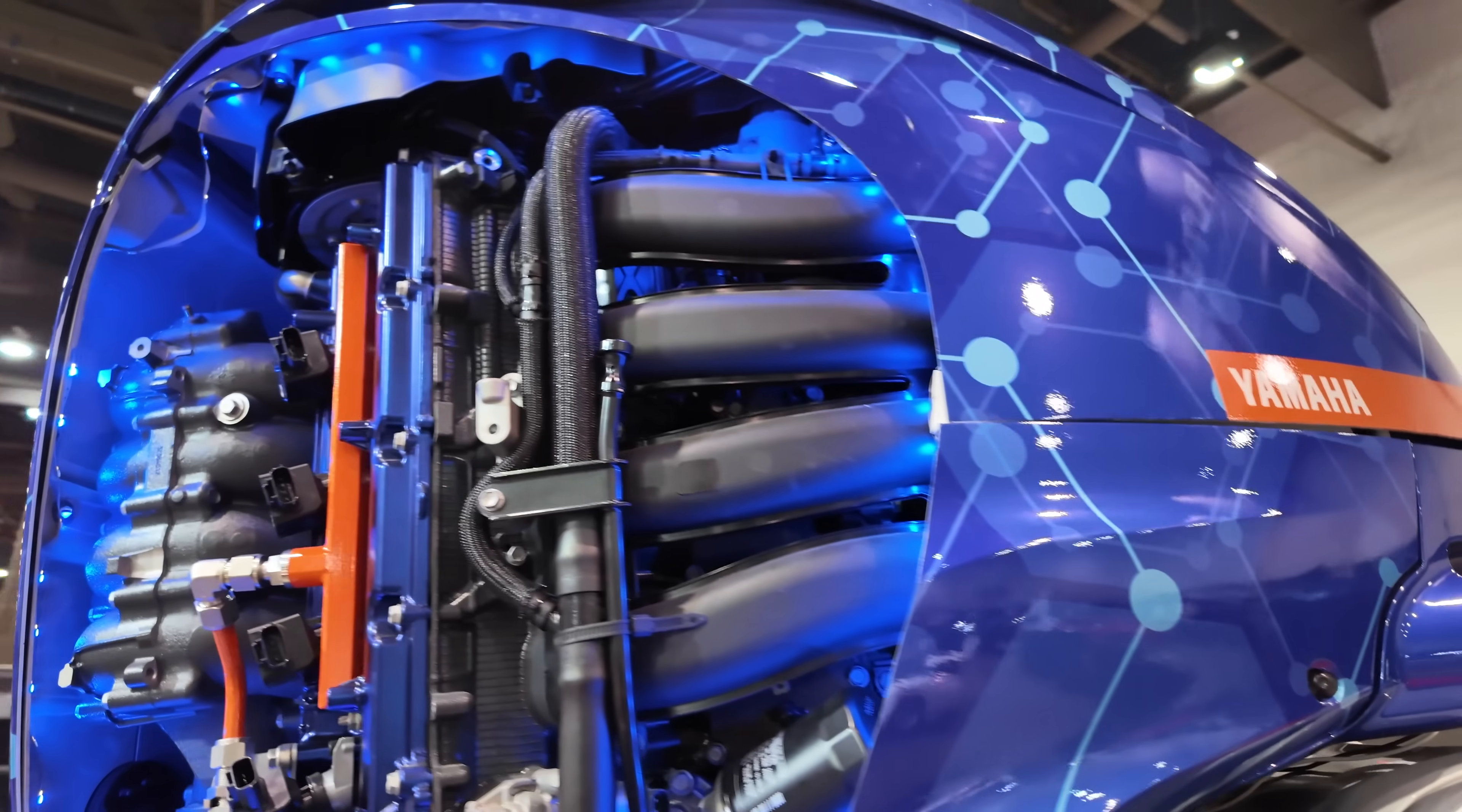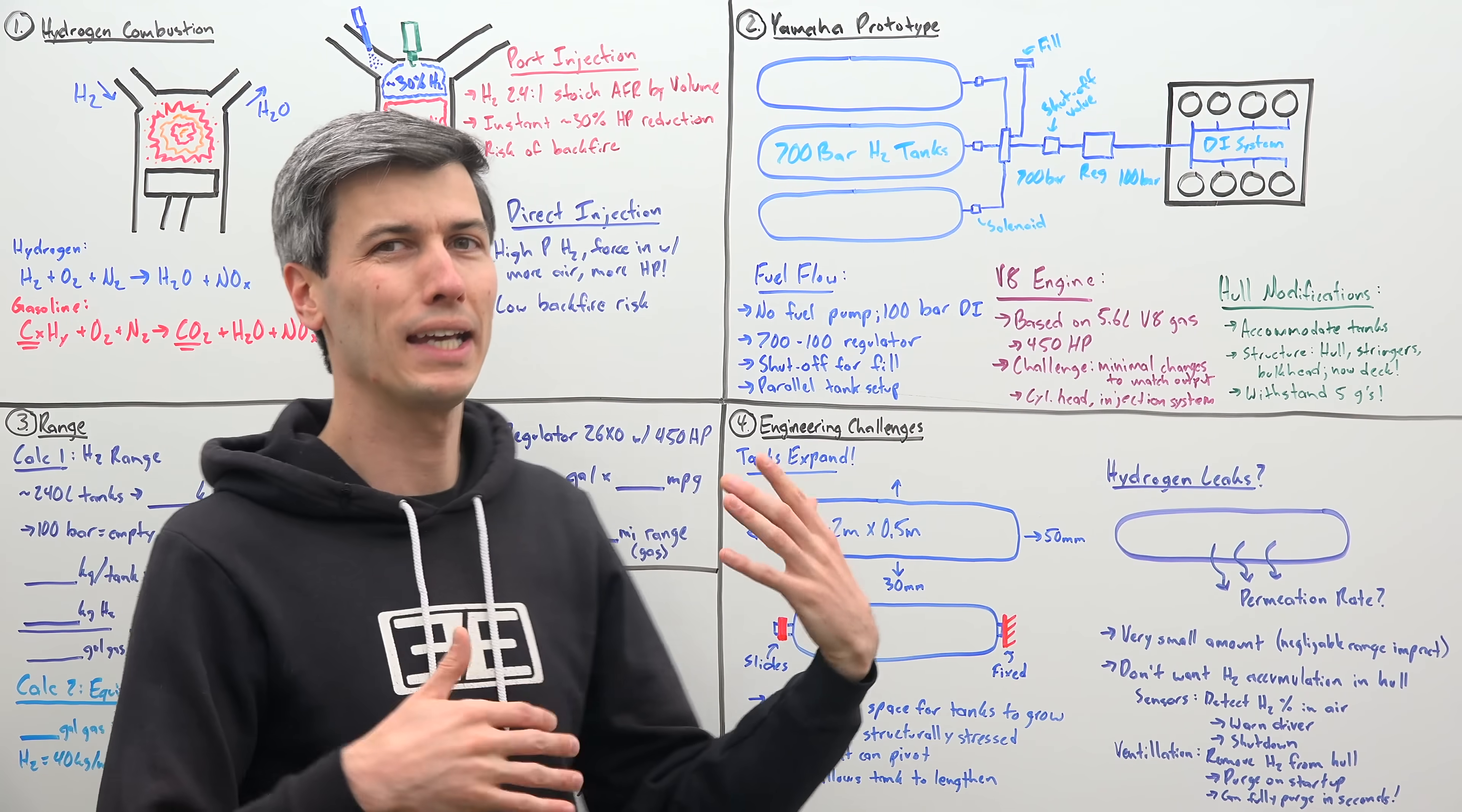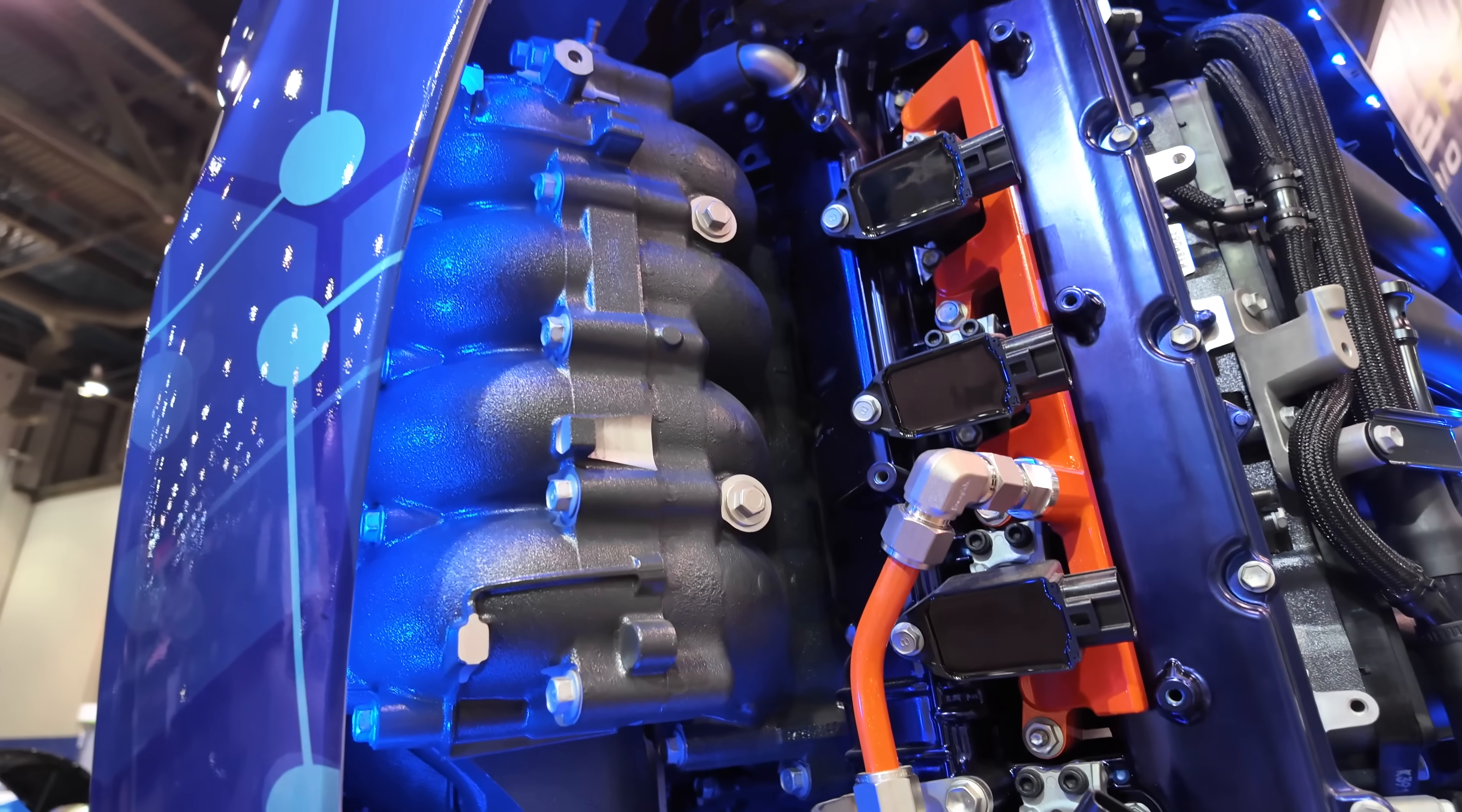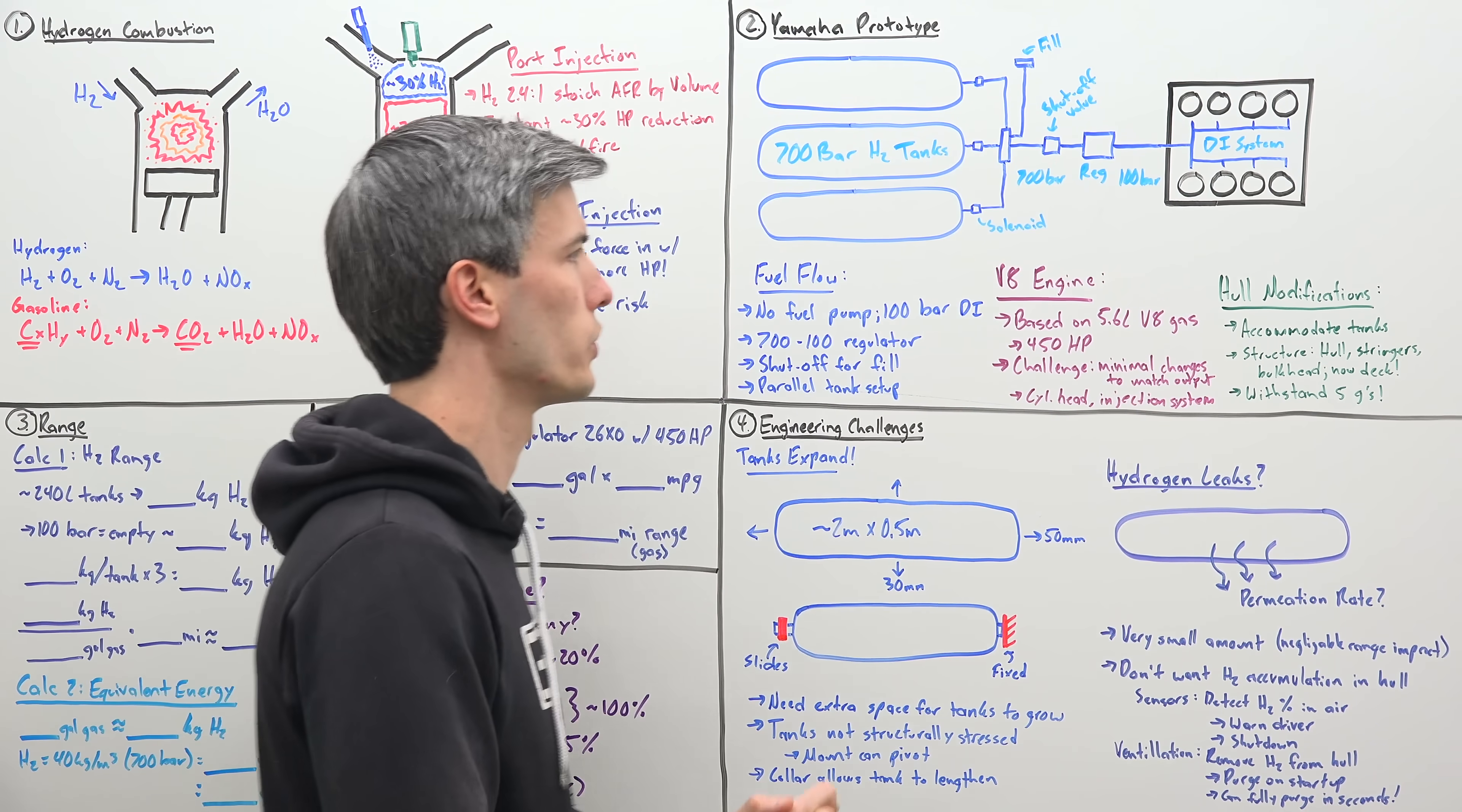A 5.6 liter V8 engine that this is based on, which the gasoline version is making about 450 horsepower. The challenge here, of course, is trying to match that performance while making minimal changes to the combustion design. So hydrogen is capable of making similar power, similar efficiency, but challenging to do that when you're starting with a gas engine and then trying to minimize what tweaks you need to make in order to make that whole system work. So, of course, different cylinder head here and, of course, that different fuel injection system.